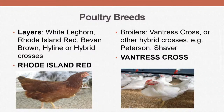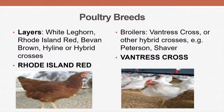I want to look first at the poultry breeds, because most of us in our region and in Jamaica really enjoy poultry. We raise those animals for two purposes: we have the layers for eggs and the broilers for meat. An example of a layer breed — we can see that on the screen now — we have the Rhode Island Red. Other layer breeds are the White Leghorn, the Bevan Brown, Eyeline, or Hybrid Crosses.